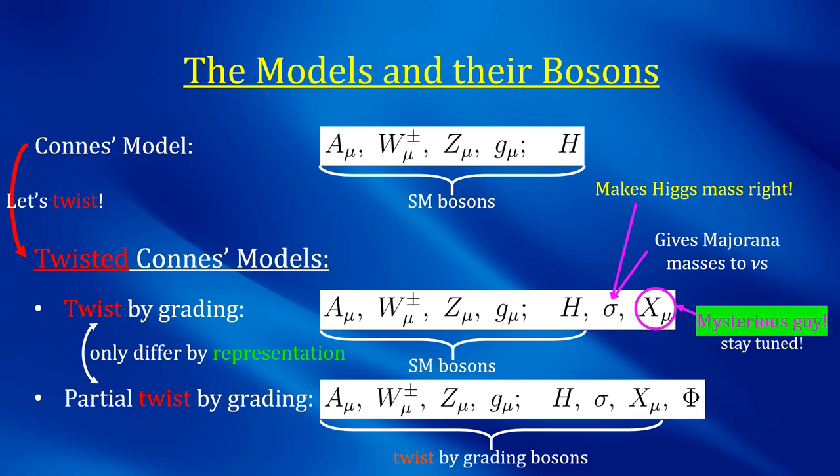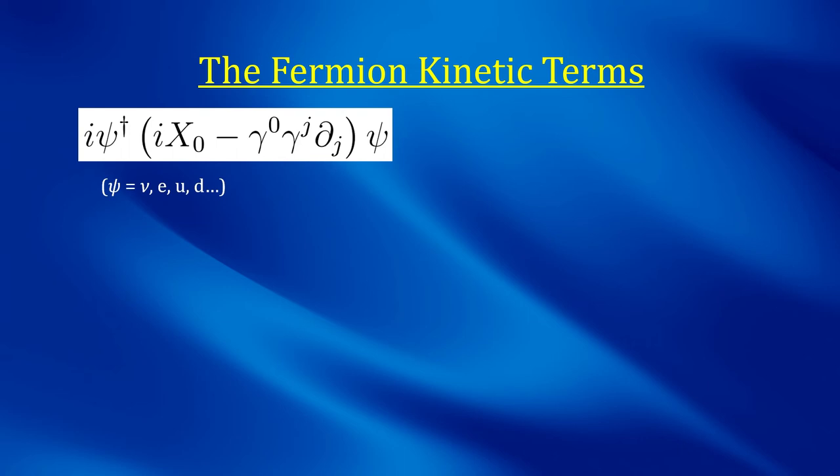In the other twisted case, one finds the same bosons of the twist by grading case, plus a new scalar color-octet field phi. What one has to do now is to calculate the action using the two formulas I showed you before. We are still in the middle of calculating the bosonic part of the action, but we are already done with the fermionic part. And here is where we got the big surprise.